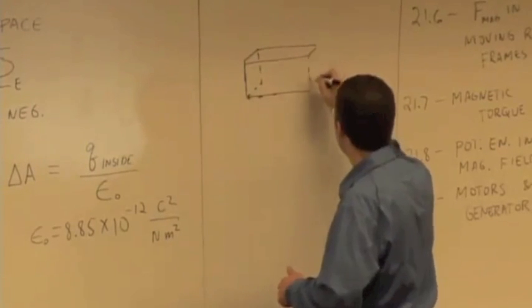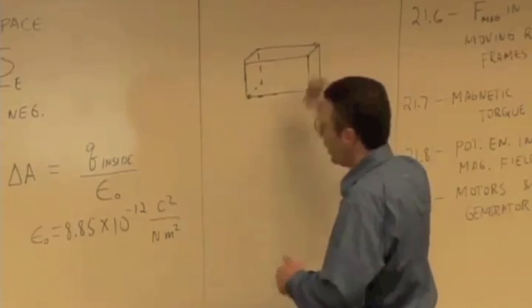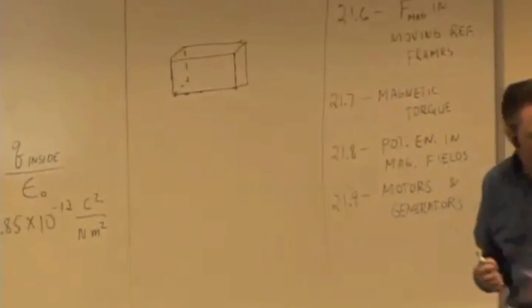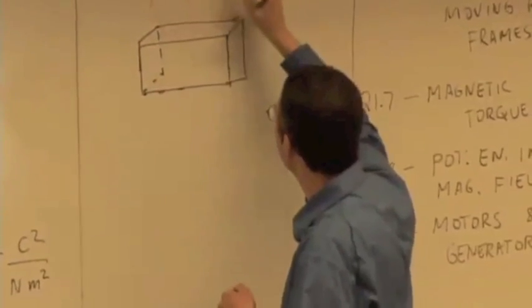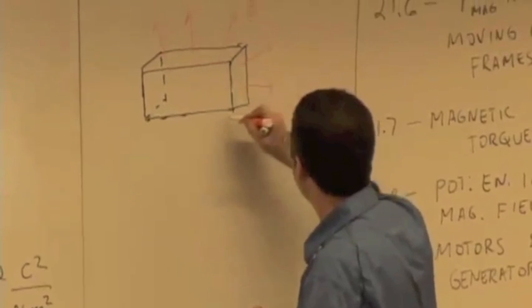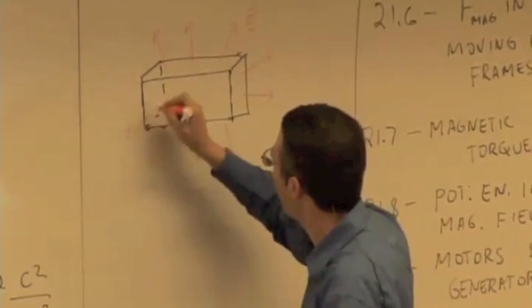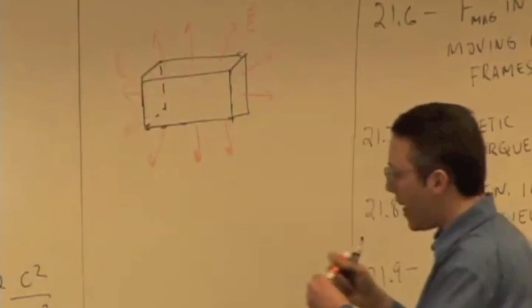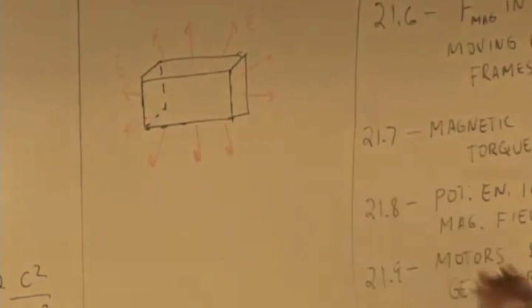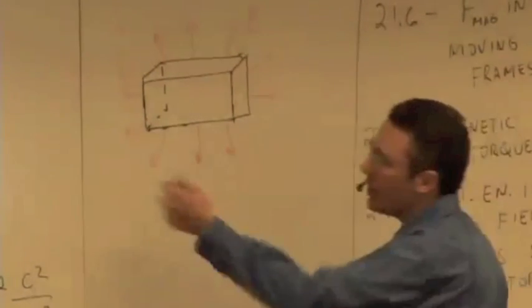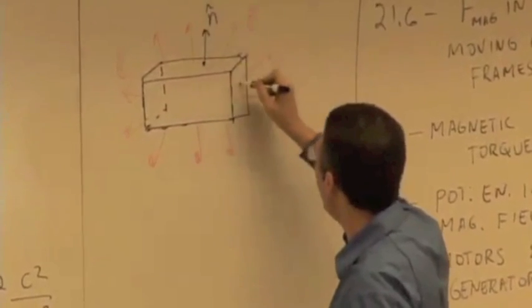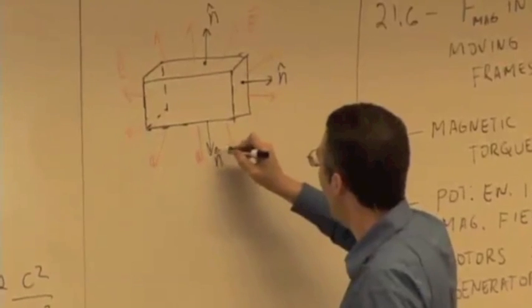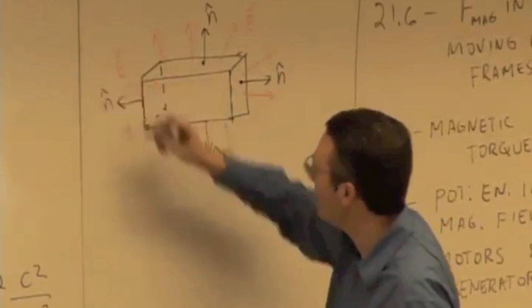Let's do this. So here is our box again. And we had electric field that was pointing toward the outside of the box. What I have to do is add up the electric flux over the entire surface, and that will tell me something about the charge inside. Well, I have to know the direction of N hat. And on the top surface, N hat is that way. On the side, N hat is that way. On the bottom, N hat is down. On this side, N hat is that way, because it's perpendicular to the surface and pointing towards the outside.